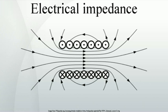Impedance defined in terms of jω can strictly only be applied to circuits which are driven with a steady-state AC signal. The concept of impedance can be extended to a circuit energized with any arbitrary signal by using complex frequency instead of jω. Complex frequency is given the symbol s and is, in general, a complex number. Signals are expressed in terms of complex frequency by taking the Laplace transform of the time-domain expression of the signal. The impedance of the basic circuit elements in this more general notation simplifies to s equals zero for a DC circuit, and s equals jω for a steady-state sinusoidal AC signal.